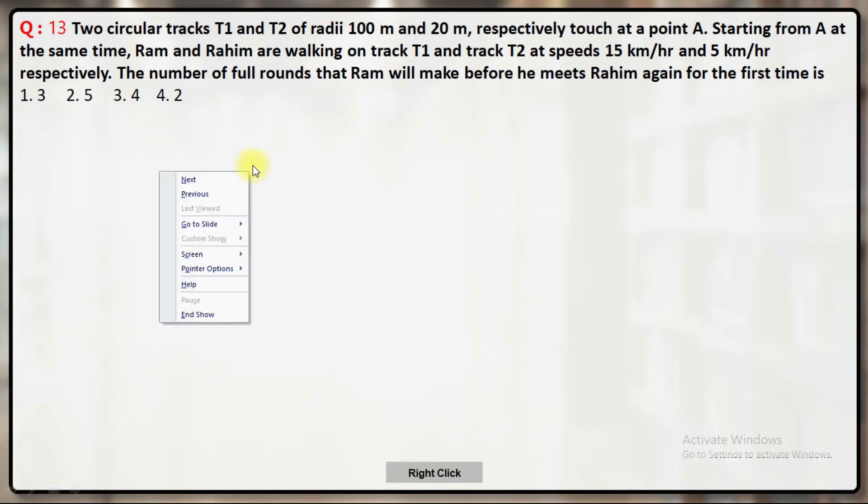Okay, it's a question of time, speed and distance. What is given here? Their speeds are given and the ratio of their radius are also given.